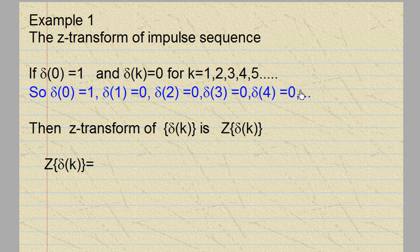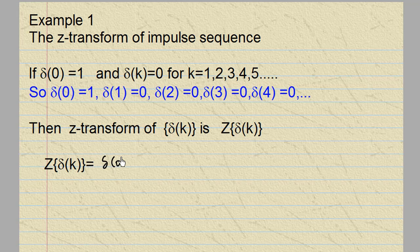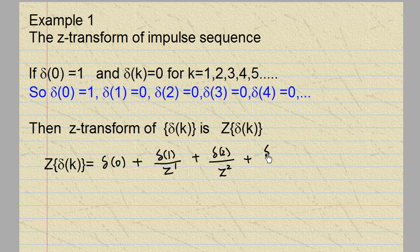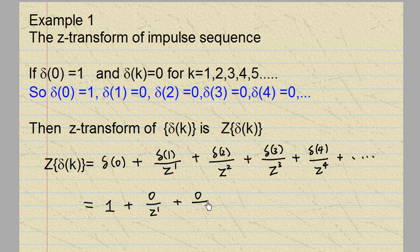The Z-transform of this impulse sequence is equal to δ(0) + δ(1)/z + δ(2)/z² + δ(3)/z³ + δ(4)/z⁴ and so on. But we know δ(0) is 1 and δ(1) is 0, δ(2) is also 0, δ(3) is also 0, δ(4) is also 0, and in fact all the rest of the terms are 0. So this is an easy sum.